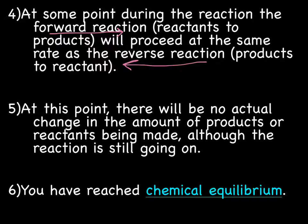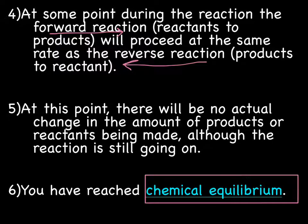At this point, there's actually no net change in the amount of products or reactants being made. The reaction is still going on — as two reactants come together forming product, at the very same time a product is breaking apart back into reactants. Something is still happening in your reaction dish, but the net change is nothing. Every time you make a product, you make a reactant, back and forth. When you reach that point, you have reached chemical equilibrium — you've made as much product as you're going to make.